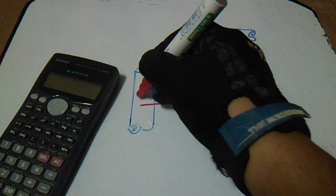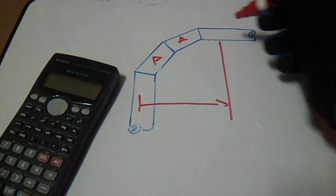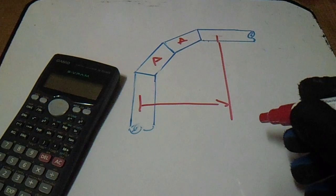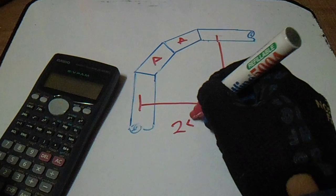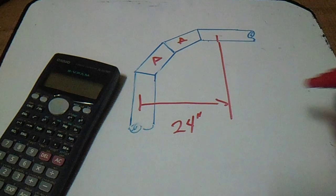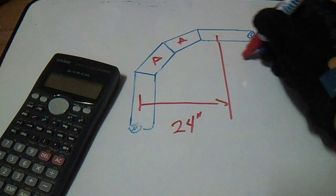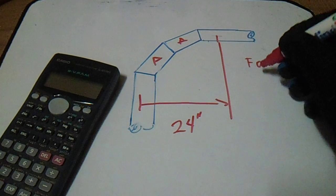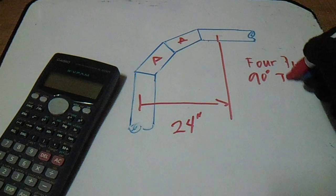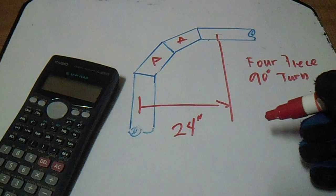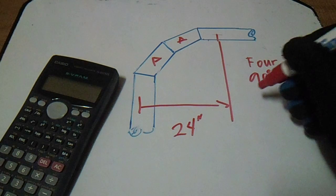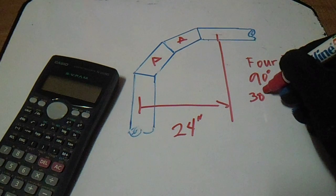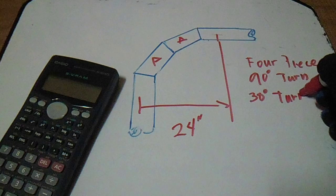The radius is from the center of the pipe, and also from the center of the pipe. Let's say we have a radius of 24 inches. This is a four-piece 90-degree turn and we need 3 times 30-degree turns.